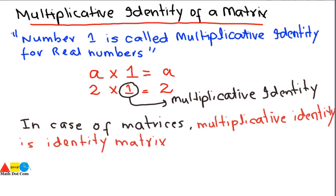The identity matrix is represented by I, and we put in the subscript as 2 in case the matrix is of order 2×2. The identity matrix is a matrix having 1 in the diagonal and the rest of the entries will be 0. This is an identity matrix of 2×2 order. Keep in mind the identity matrix is a square matrix — the number of rows must be equal to the number of columns.